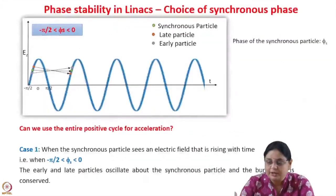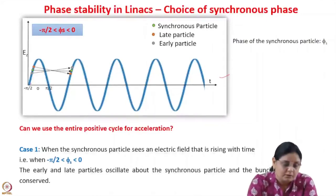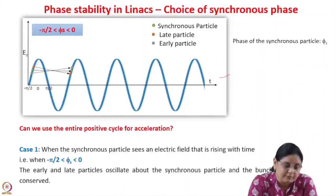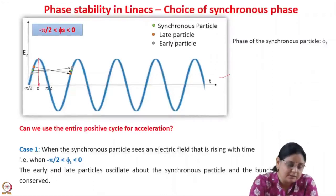In the longitudinal direction, the electric field is applied for acceleration and has a sinusoidal variation. Since the field is varying in time, this gives rise to the concept of phase. Depending on the phase of the electric field, the value of the electric field is different. In a linac, the convention is that we choose the phase where the electric field is maximum as 0. A particle seeing this phase will get maximum energy gain, whereas a particle seeing a phase of minus π/2 or π/2 will get no energy gain because the Ez field is 0.